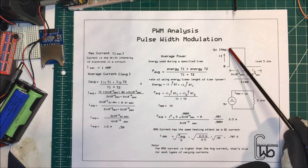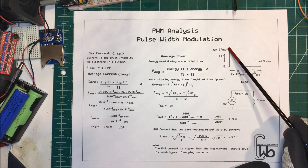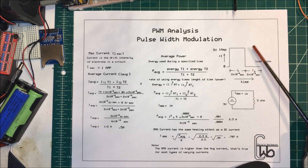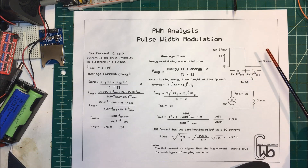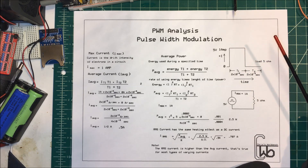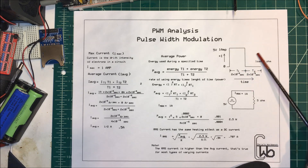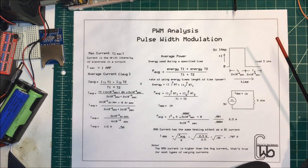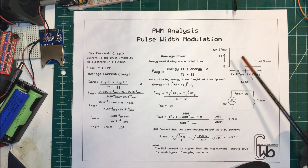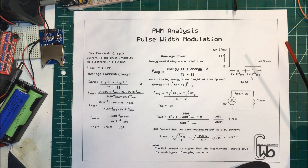That makes sense: half the time it's at one amp, and the other half the time it's at zero, so the average is going to be 0.5 amps.